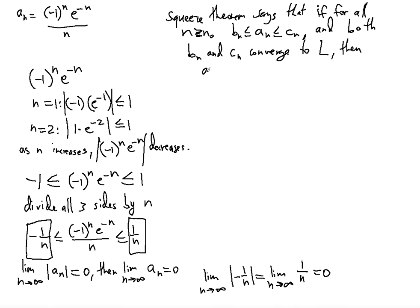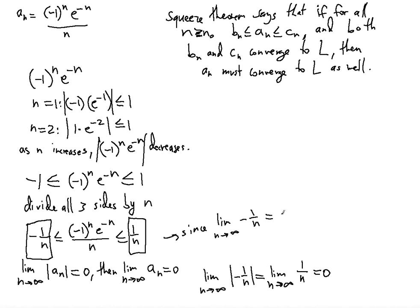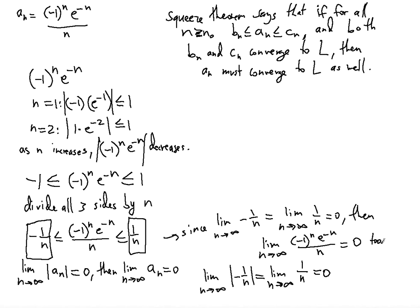In this situation, since the limit as n approaches infinity of negative 1/n equals the limit as n approaches infinity of 1/n, which both equal 0, then by the squeeze theorem the limit as n approaches infinity of (-1)^n · e^(-n) / n also equals 0. This completes the first, more theoretical method of proof.